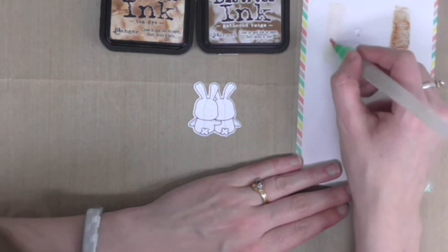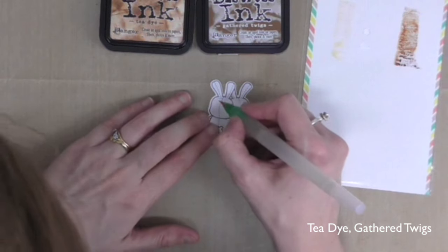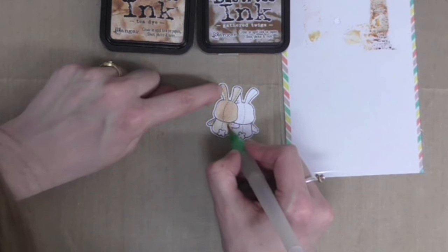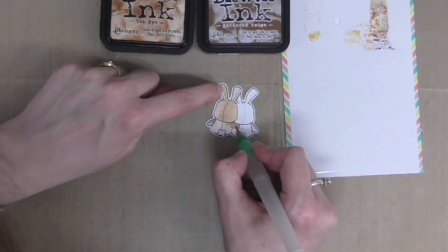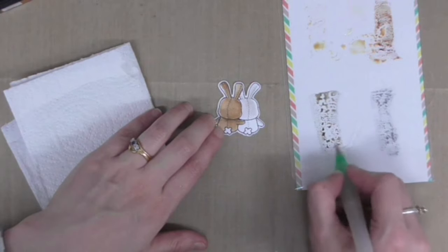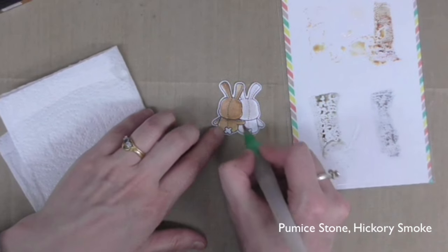To color in the bunnies, I'm using once again my distress inks. I've just smooshed that onto some scrap card packaging so that I have a white background underneath the slick surface. I can then use a water brush to pick up the ink and paint in the same way you would with paints.